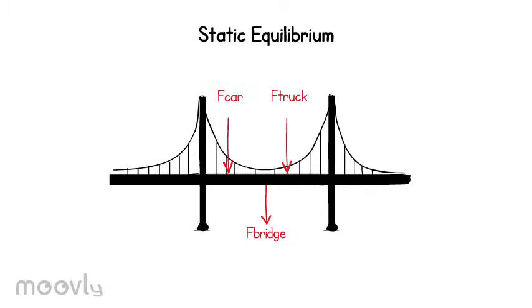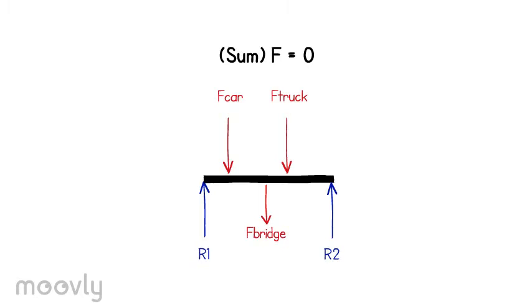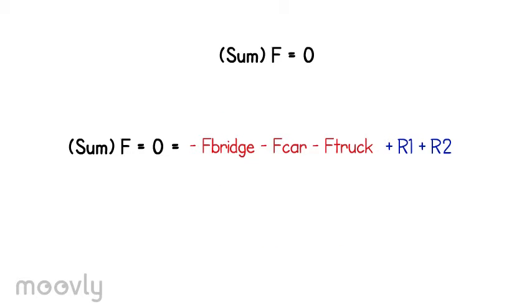When forces are applied to the bridge, the bridge's supports react. Here's a free body diagram picturing forces acting on the bridge and the supports reaction forces. Using the equation sum of forces equals zero in the vertical direction, we see how we could begin to solve for the support reactions.